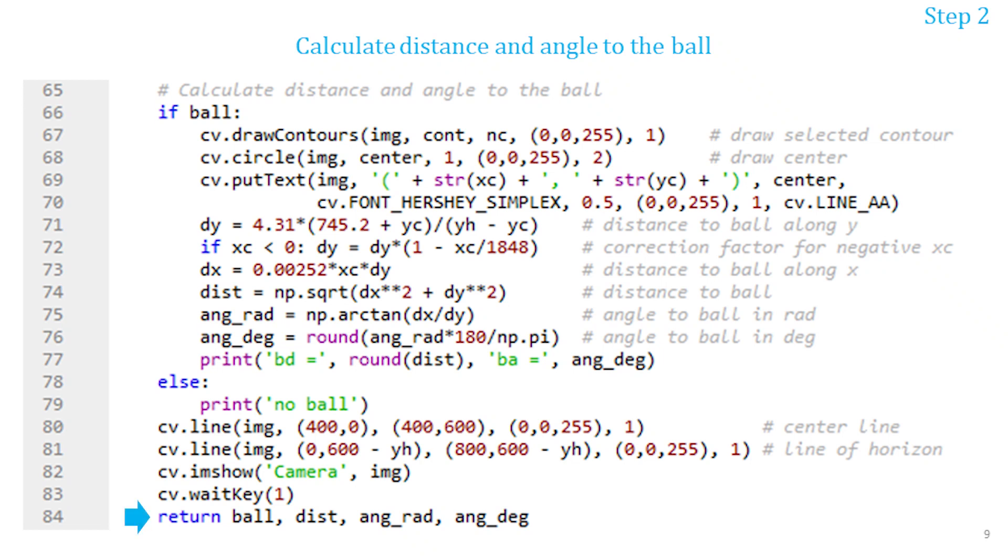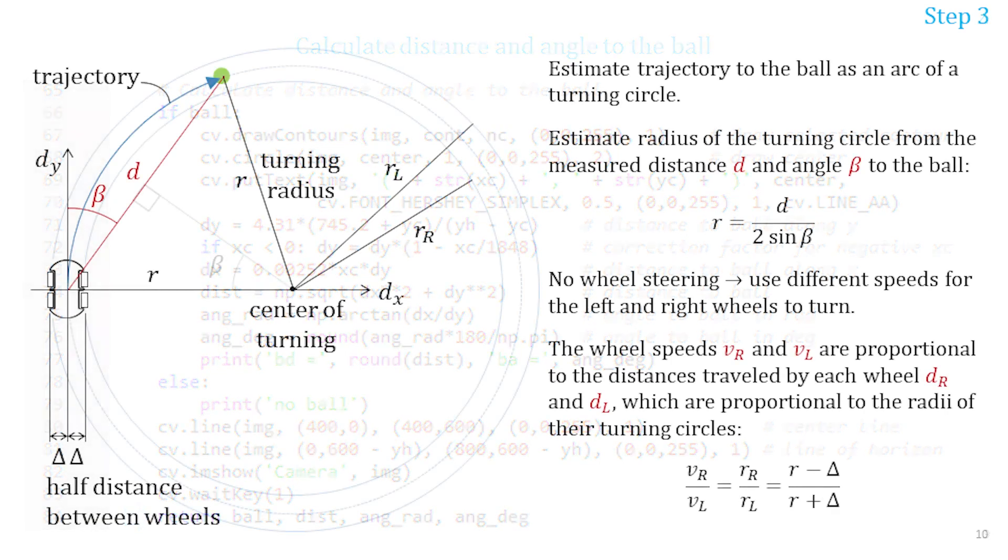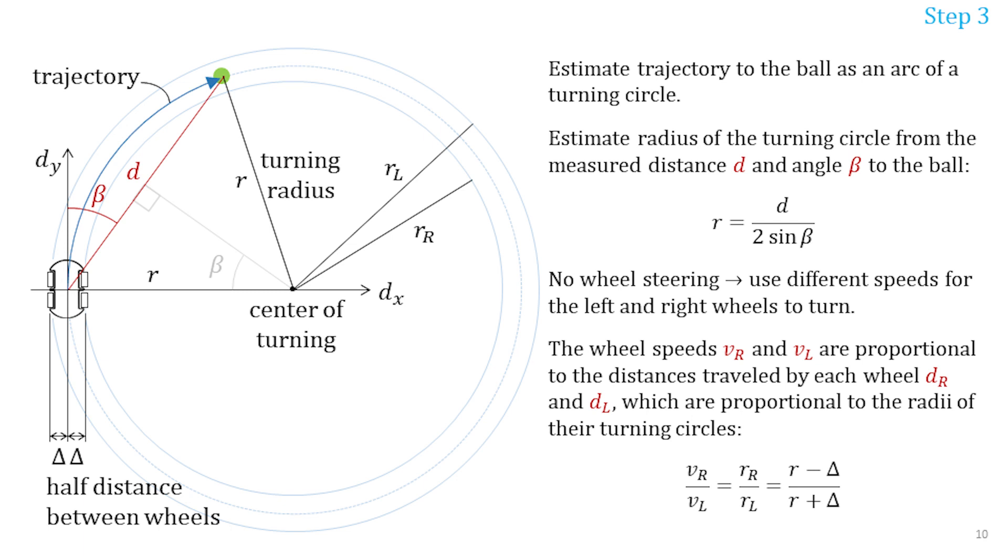The capture function returns four values: the flag ball indicating if the ball is present in the image, the distance to the ball and the angle to the ball in radians and degrees. The next step is to estimate the trajectory of the car to the ball using the distance and the angle to the ball returned by the capture function. I decided that the trajectory is going to be a turn of the radius calculated from the ball distance and angle.